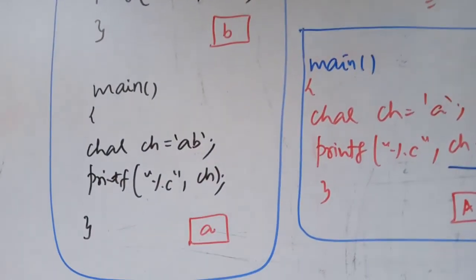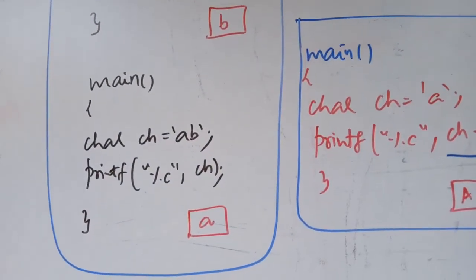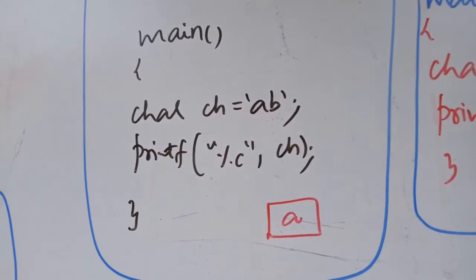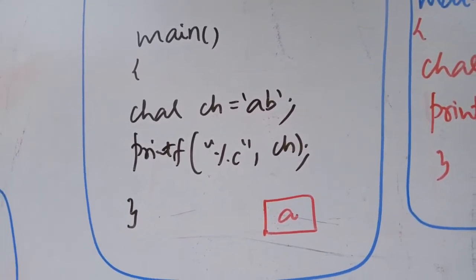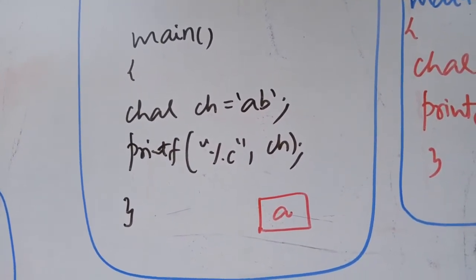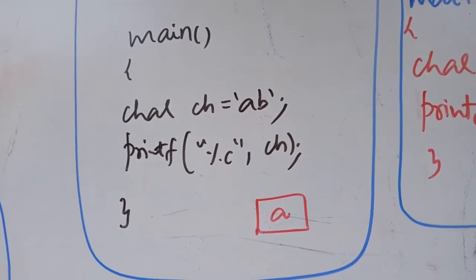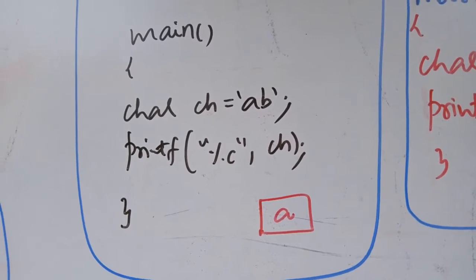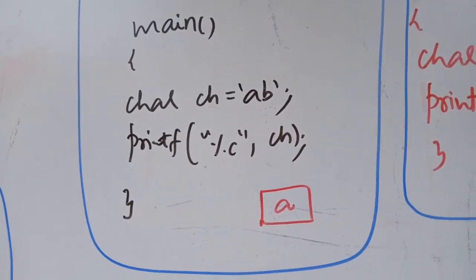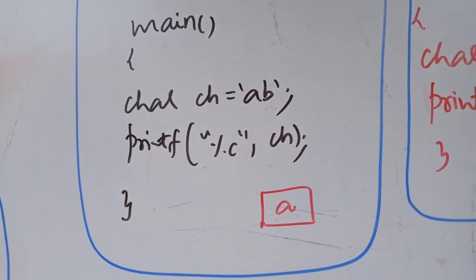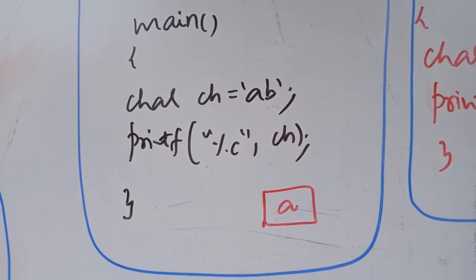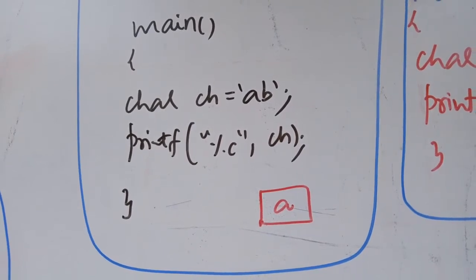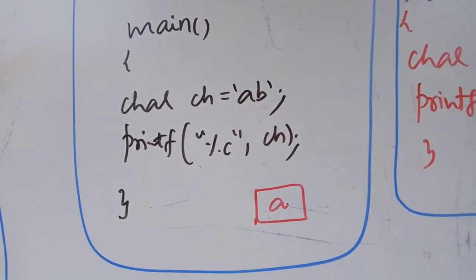Look at the second program. The variable ch is initialized with two characters, but it will accept only one character. Any character variable means it will take only one character at a time.